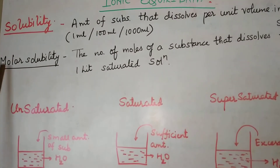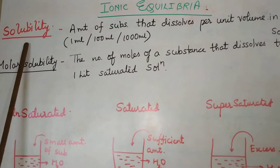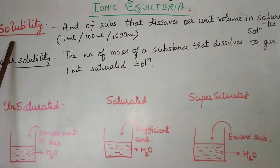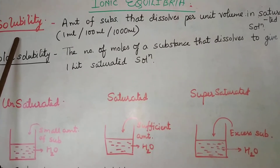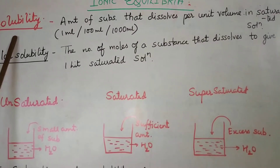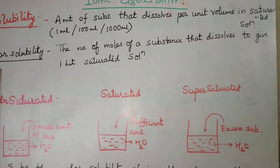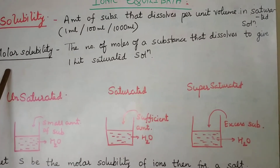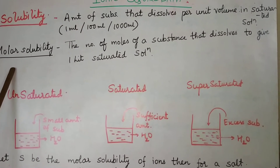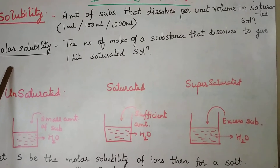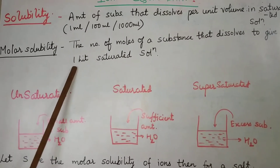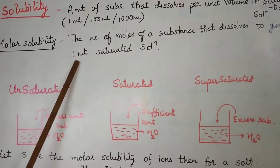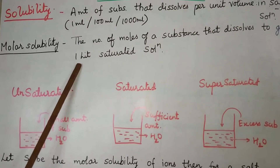So see the two concepts: solubility is the amount of substance in grams per unit volume of the saturated solution, while molar solubility is the number of moles of the substance present in 1 liter of saturated solution — the volume is fixed at 1 liter.